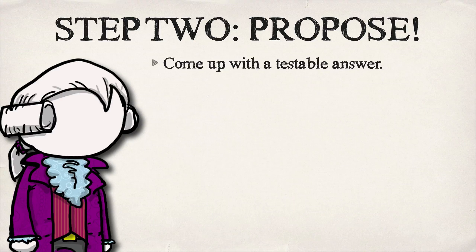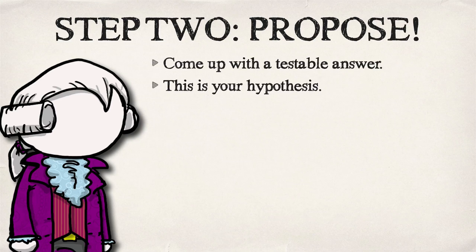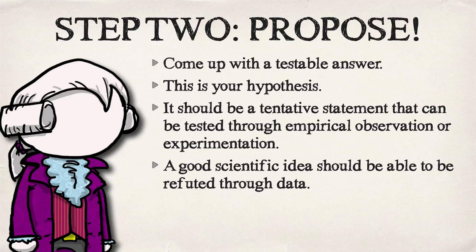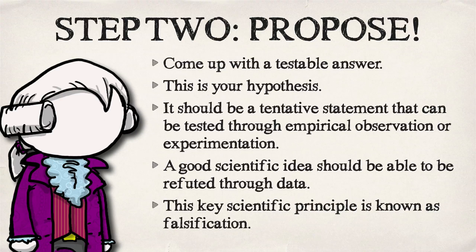The second step of the scientific method is that you are going to propose a hypothesis — you're going to come up with a testable answer. This is a tentative statement that can be tested through either empirical observation or experimentation. If you can't experiment, you can always just look for observations. A good scientific idea should be able to be refuted through the data that you collect. This is a key scientific principle known as falsification, and we might talk a little bit more about falsification later.